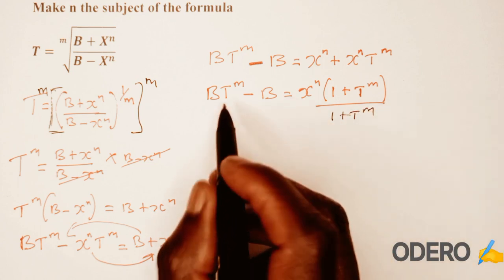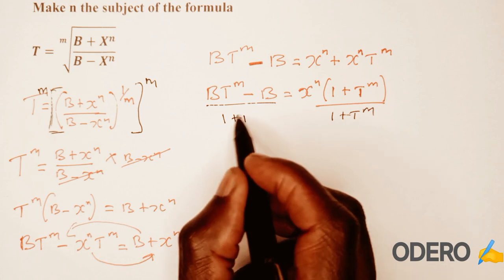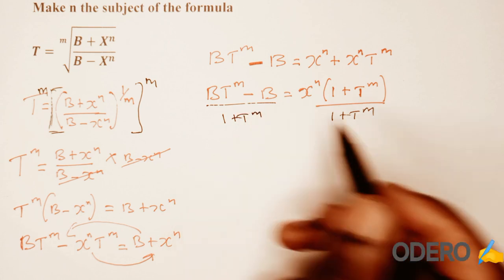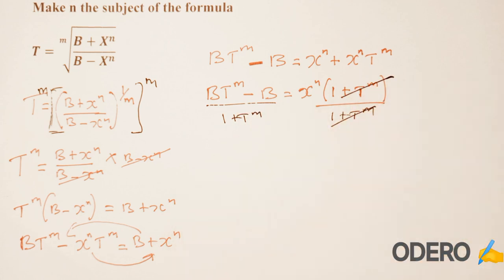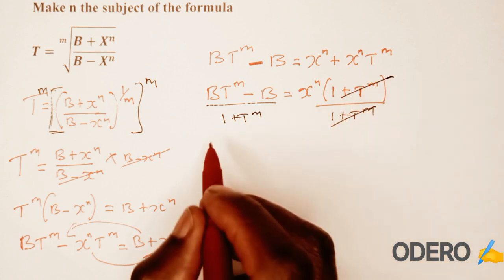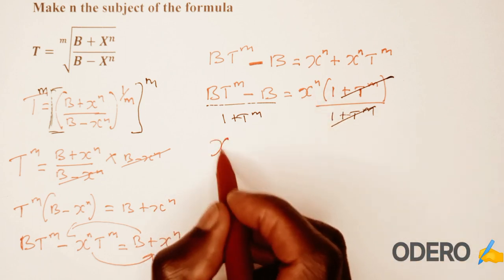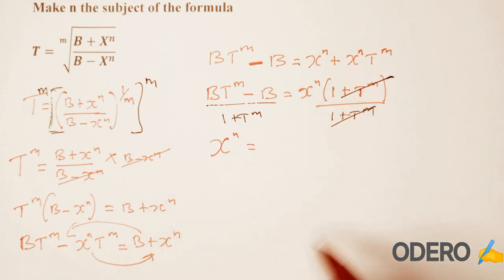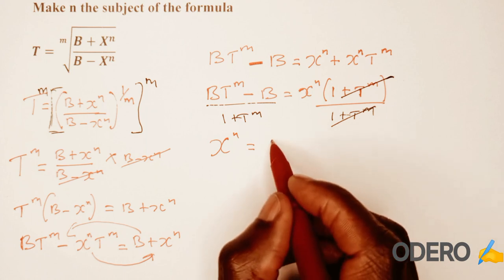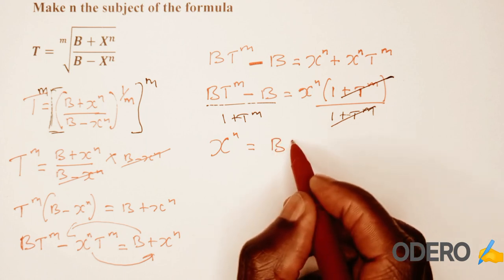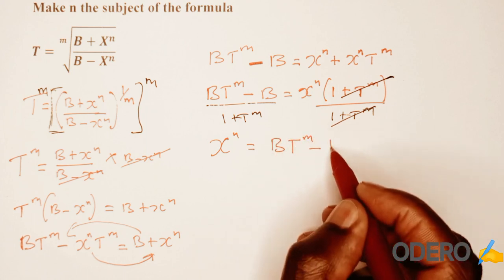Then from there we can divide both sides by 1 plus t raised to m, and this side also by 1 plus t raised to m. This one will cancel out, so you're going to remain with x raised to n on one side, then on the other side you're going to have b t raised to m minus b divided by 1 plus t raised to m.